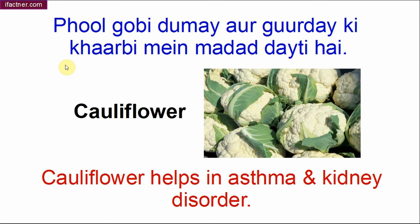Ab aage phool gobi — phool gobi dhamah aur gurdhe ki kharabhi mein madad deti hai. Agar kisi ko dhamah ho ya phir gurdhe ki kharabhi ho toh doctor ke mashware ke saath cauliflower ko use karayin. Phool matlab 'flower' — Cauliflower helps in asthma and kidney disorder.